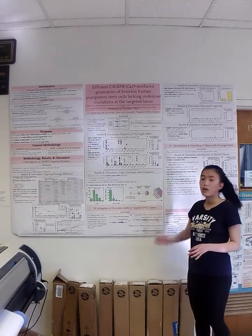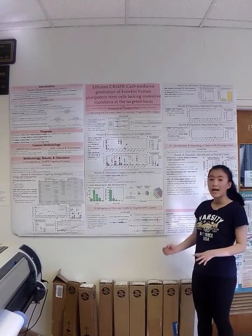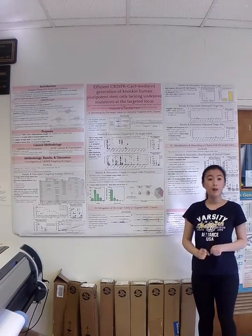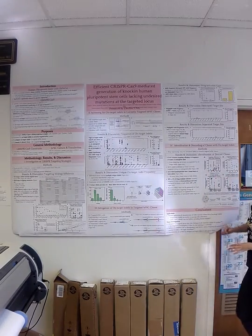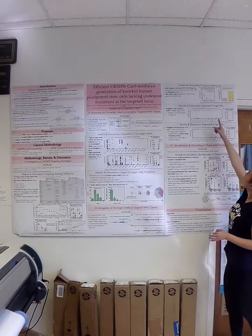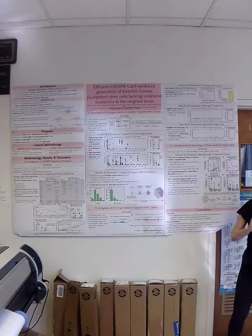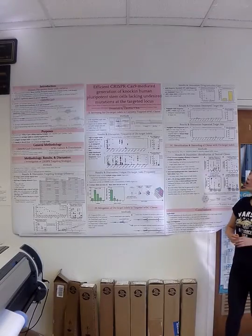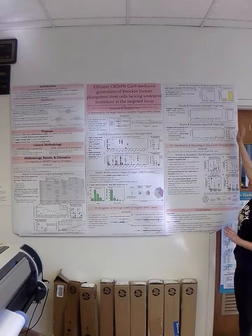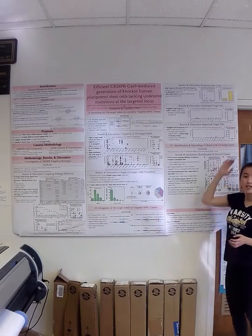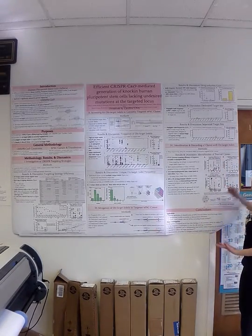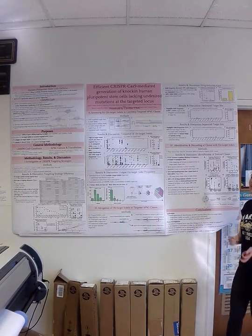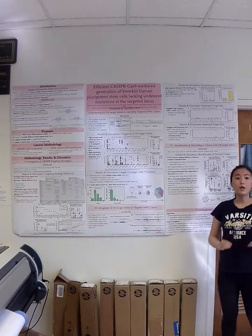Thus, in order to mitigate the on-target indels in these clones, the researchers decided to target the HPSC clones with a drug-inducible Cas9 that only allowed activity for up to 36 hours. Results show that with this drug-inducible Cas9, the indel frequency, as shown in Figure 7A, decreased to approximately 10% when compared to the control Cas9, which induced a frequency of up to 42%. Moreover, as Figure 7B shows, the inducible Cas9 yielded 80% clones desirable, while the control Cas9 only yielded less than 20% clones desirable. This shows that the drug-inducible Cas9 does indeed decrease the indel frequency, but it does not eliminate it.